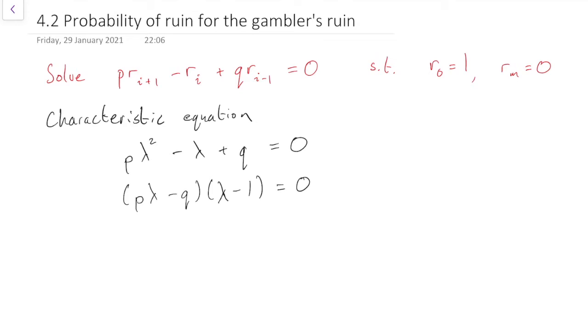But this means that we have solutions of the characteristic equation, which are 1 and which are q over p, which if you remember from section 3 we called that rho.